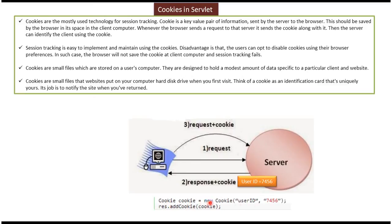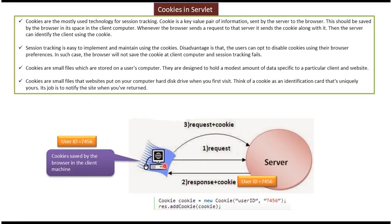Cookie cookie equals new cookie with user ID 7456, and that particular cookie is added to the response. In the second step, when the server sends the response to the client, it attaches the cookie — user ID equal to 7456. This response goes to the client browser, which saves that cookie information on the client machine. So the cookie user ID equal to 7456 is now saved on the client machine.